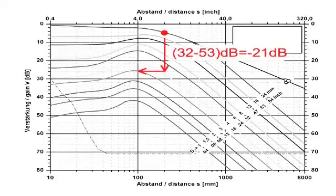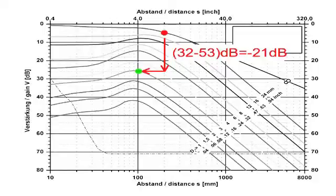Let us next assume that we want to judge a discontinuity that produces a signal on the screen at a depth of 100 mm, which needs 53 dB of instrument gain to be brought to 80% screen height. Please be aware that both signals have to be brought up to the same screen height, regardless if it is 80% or a different value. The gain difference between the reference echo and the echo from the discontinuity is 32 dB minus 53 dB, which equals negative 21 dB.